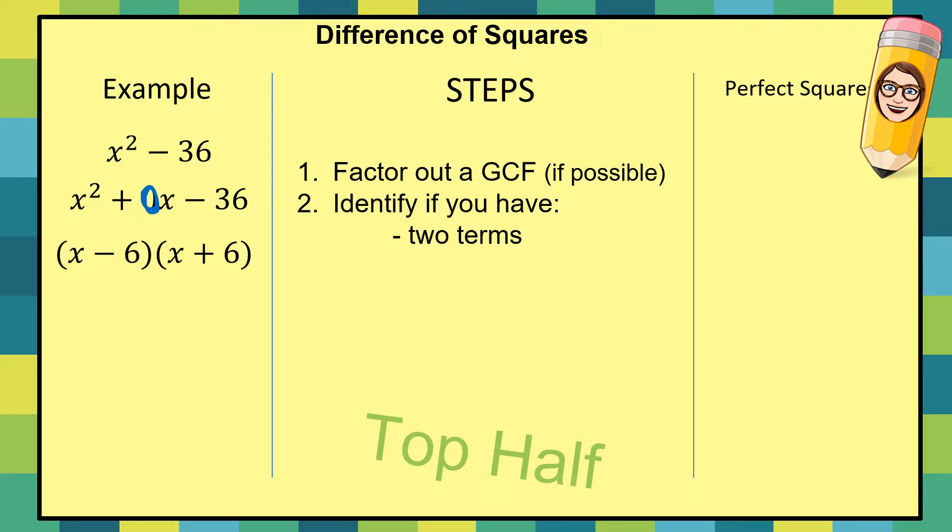Second, if we're going to use this shortcut to jump from the question to the answer, we have to identify if we have the following pieces. Do we have two terms? Two chunks of information. One, two, we do. Do we have two perfect squares? Yep, x squared, meaning I can square root it. 36, I can square root it. And do we have a subtraction sign? This little shortcut only works if there's a subtraction sign. Hence the name difference of squares.